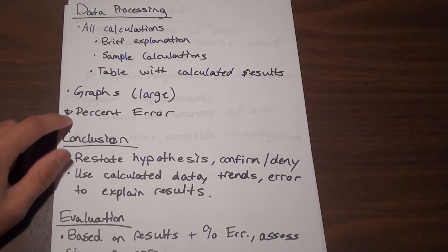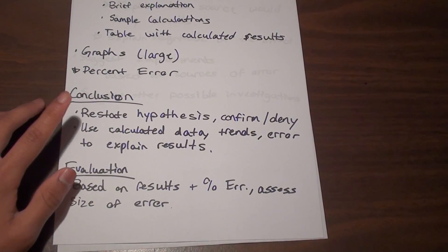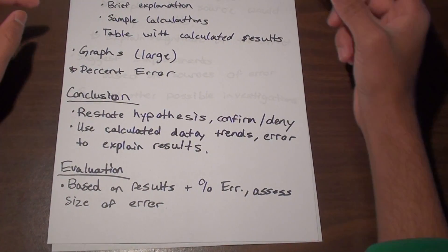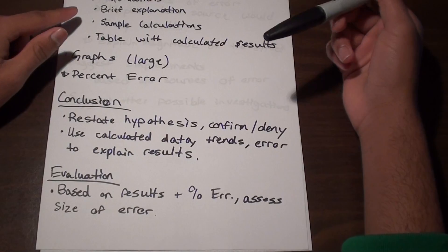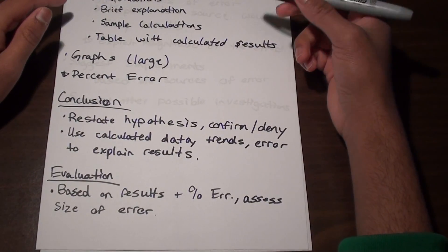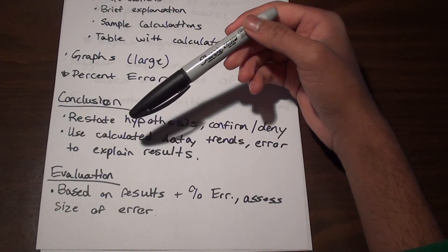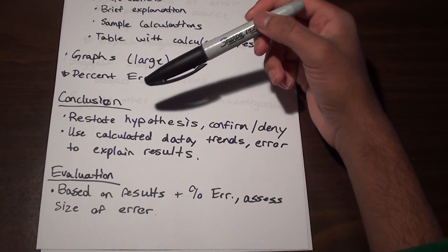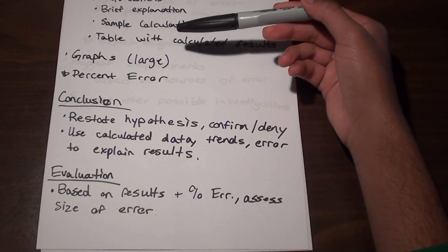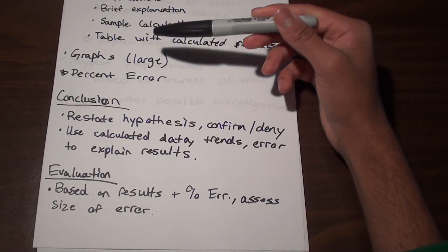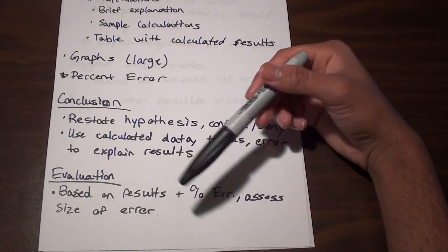And the percent error is going to be very important in the next two sections, the conclusion and the evaluation. So in the conclusion, you're going to want to restate your hypothesis, and then based on the results that you got in the data processing, you're going to want to either confirm it or deny it. Basically say the results confirmed your hypothesis or they proved your hypothesis incorrect. And you're going to want to, whenever you're explaining the results, you're going to want to use the data, and don't be afraid to repeat the averages that you calculated, things like that, trends. And you're going to want to use the percent error that you calculated to maybe explain the results, which will also come in your evaluation.